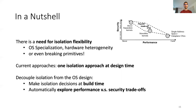As a conclusion, we highlighted the need for more isolation flexibility, whether it is for specialization purposes, to adapt to new hardware, or simply because your primitives broke. Current approaches take one isolation approach at design time, effectively representing a single point in the design space. In this work, we proposed FlexOS, an OS that decouples isolation from the OS design, effectively making isolation decisions at build time. We presented early results and motivated automatic exploration of the new trade-off space. Thank you, I'm happy to take questions now.